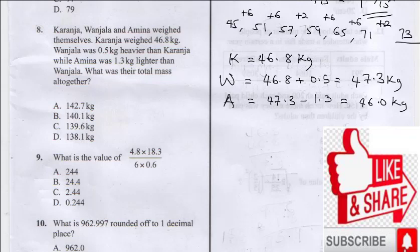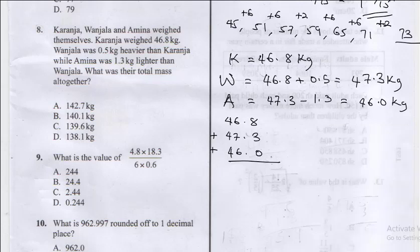So in order to get their total mass all I need to do here is sum up 46.8 plus 47.3 plus 46.0. Now here 8 plus 3 is going to give us 11, you carry 1. 1 plus 6 is 7, 7 plus 7 is 14, 14 plus 6 is 20, you carry 0 and then 2. This is 4 plus 4 plus 4, that's 12 plus 2, that's 14.